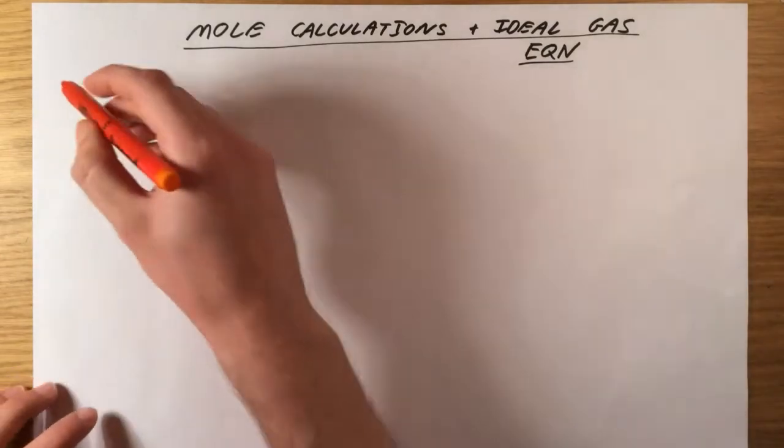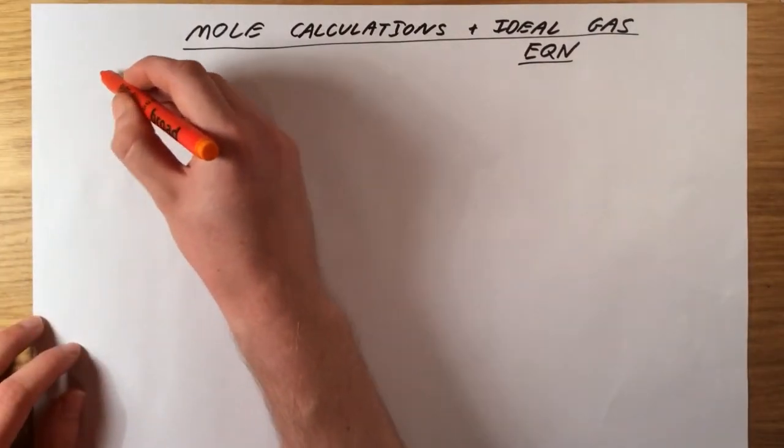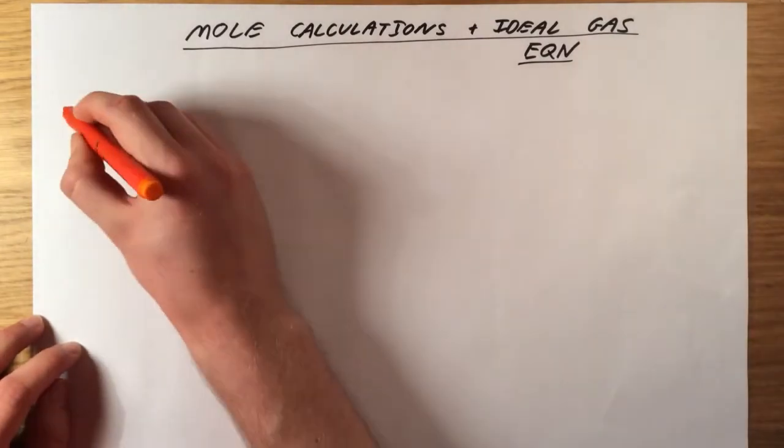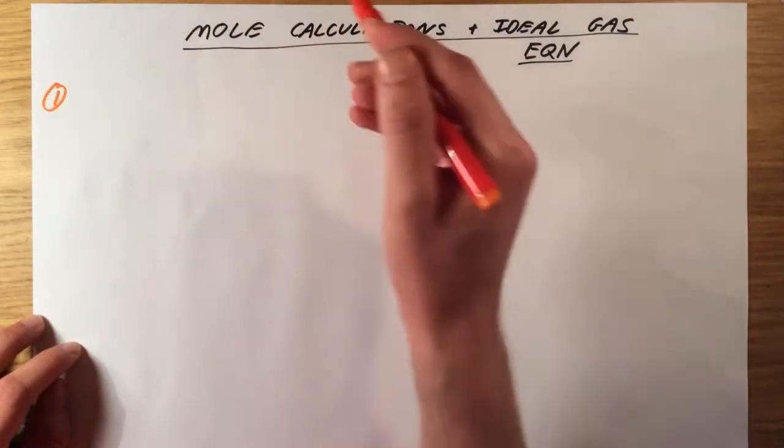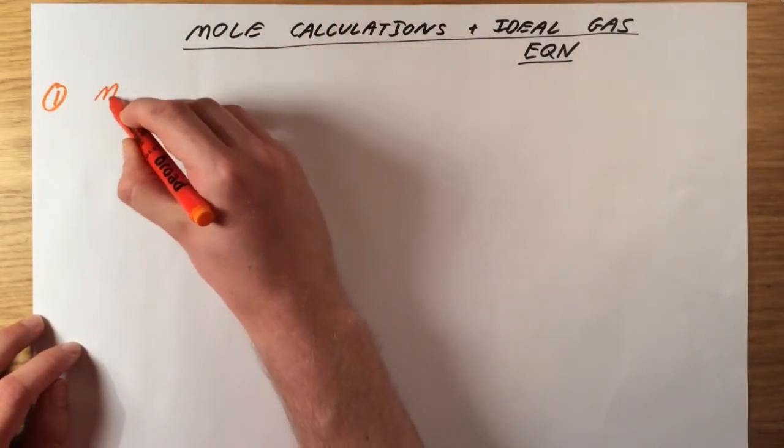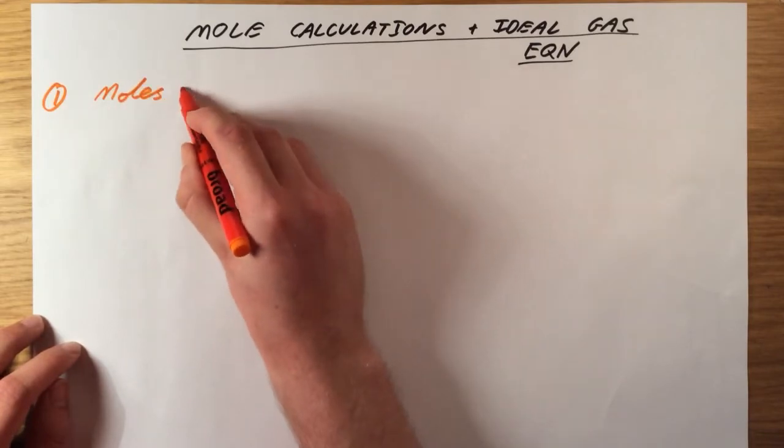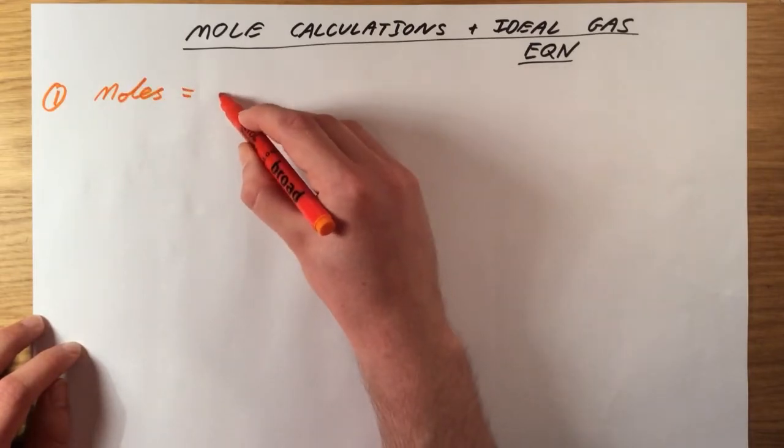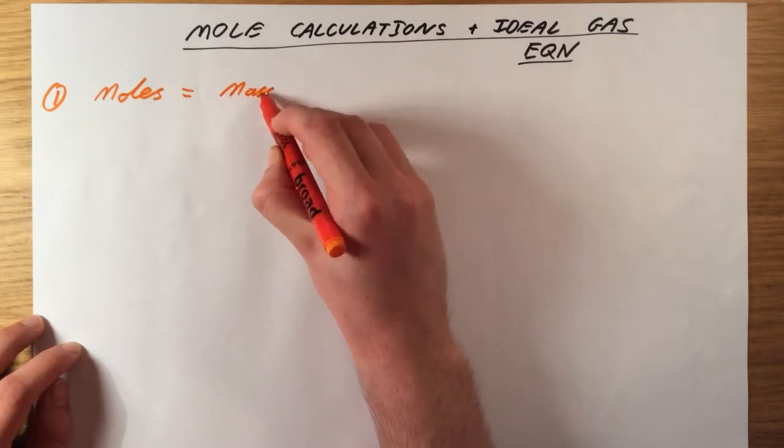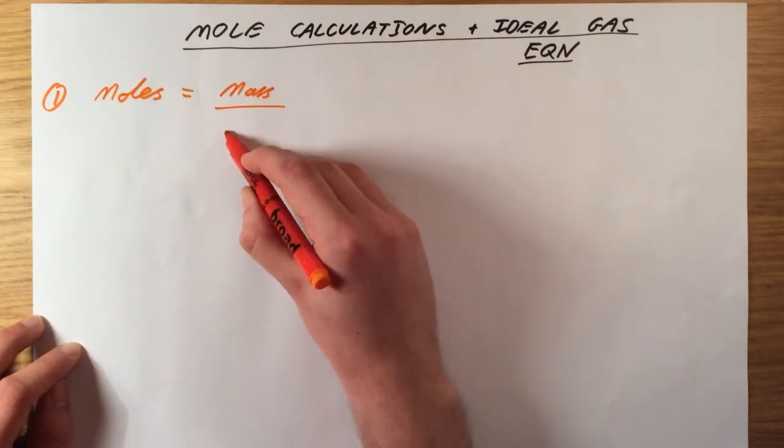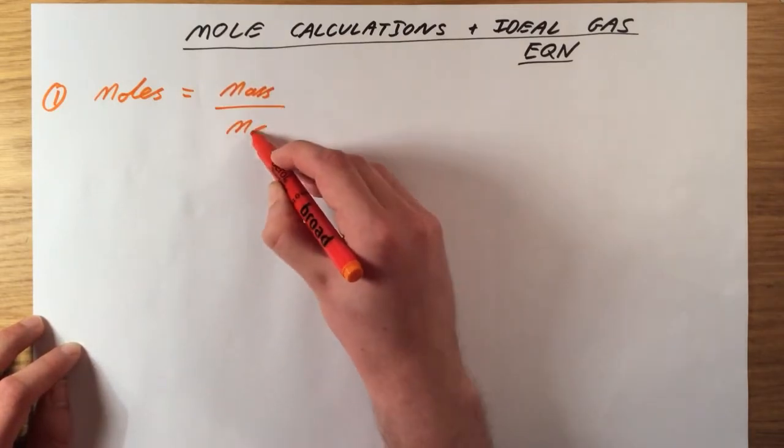So let's go through those four equations and actually look at how they can apply to some exam questions. My first equation which we need to know for this area is about mass. So if you're weighing out a solid, you can calculate the number of moles of that solid by doing its mass divided by its molecular or formula mass.